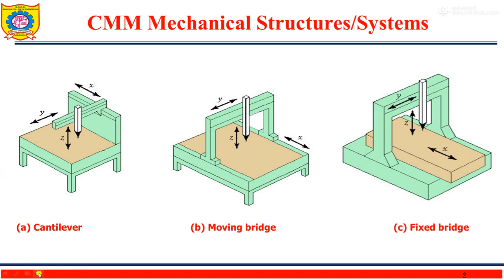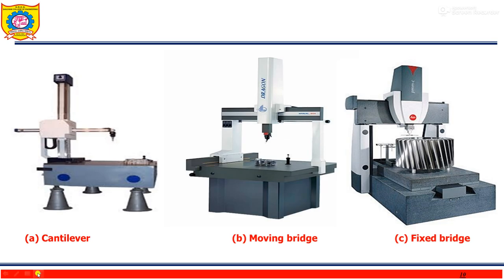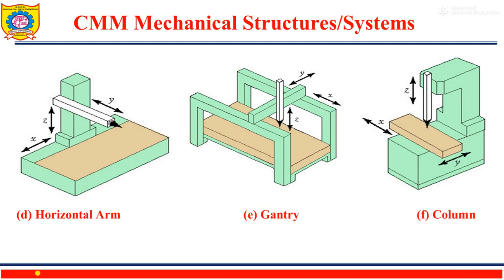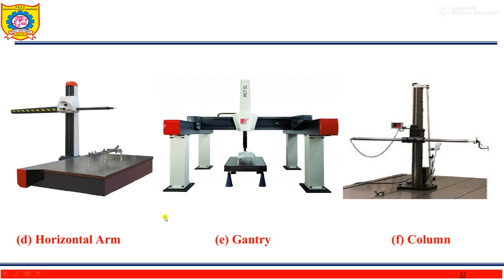Here we can see what CMMs actually look like: the first is cantilever, the second is moving bridge, and the third is fixed bridge. Additional mechanical structures include the fourth type — the horizontal arm structure, where the arm is horizontal. The fifth type is the gantry type, and the sixth is the column type. The diagrams for these structures are largely self-explanatory.